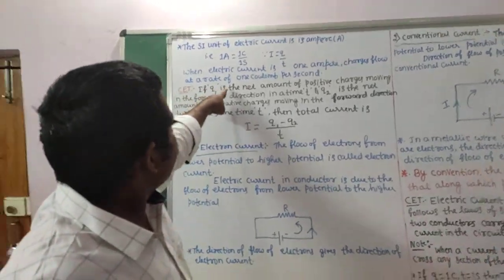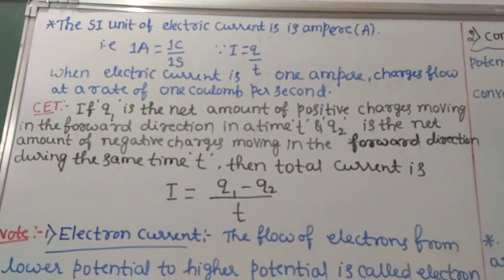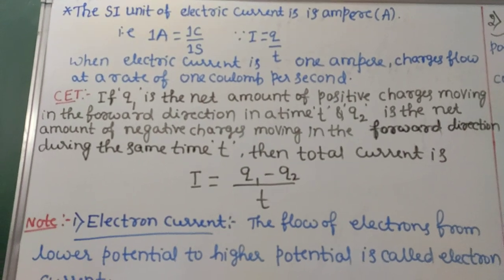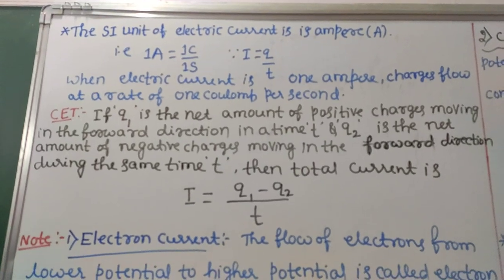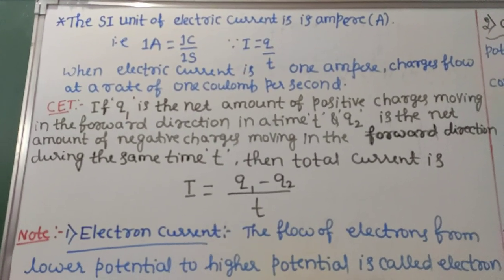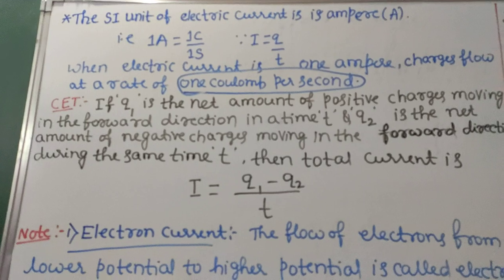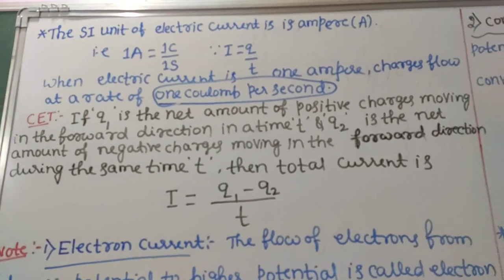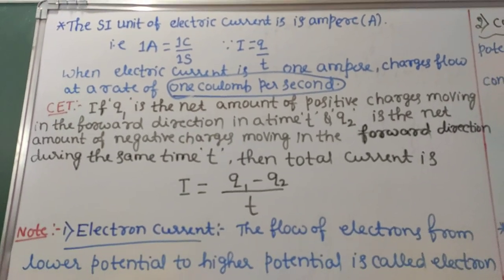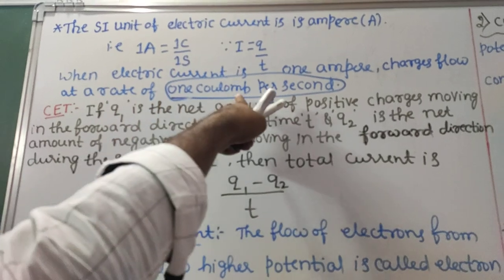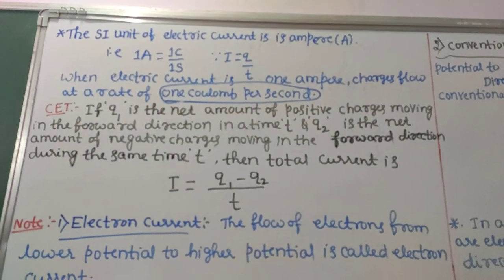When electric current is 1 ampere, charge flows at a rate of 1 coulomb per second. 1 ampere is defined as that current flowing through a conductor if charge flows at a rate of 1 coulomb per second. This is also a definition of 1 ampere. The basic formula is I is equal to Q by T.